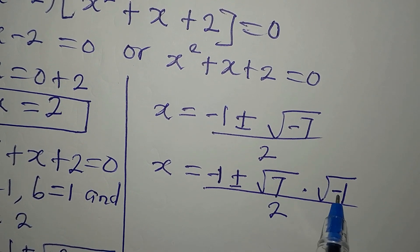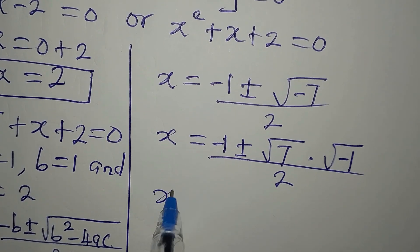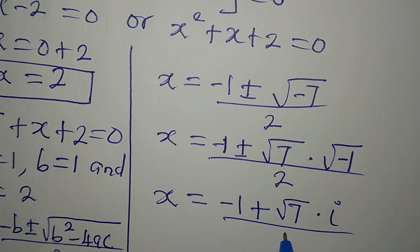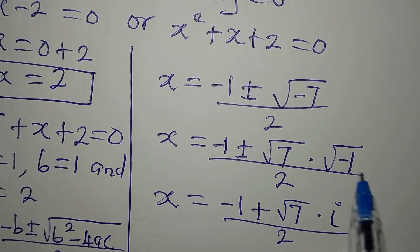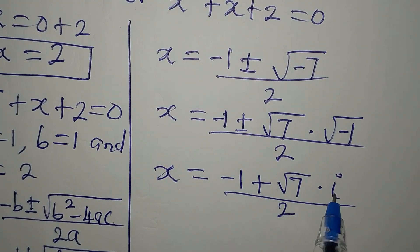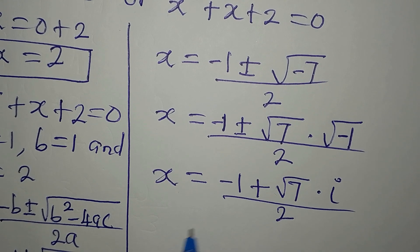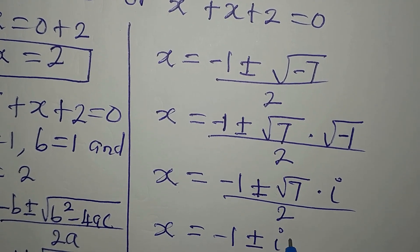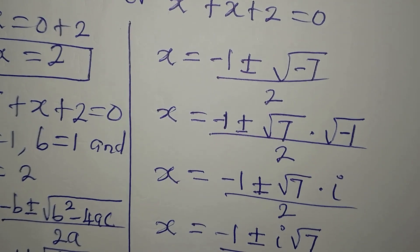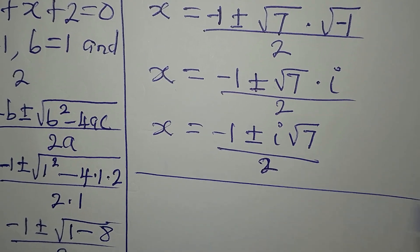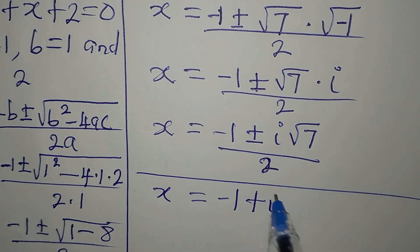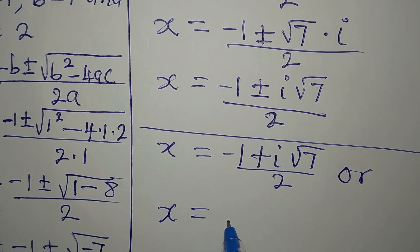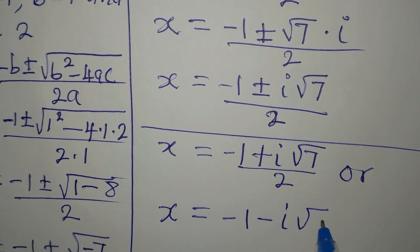We rewrite: x equals minus 1 plus or minus the square root of negative 1 times 7, divided by 2. The square root of negative 1 is imaginary, so we write i for that, giving x equals minus 1 plus or minus i root 7, all divided by 2. This is a two-in-one solution: x equals (minus 1 plus i√7) over 2, or x equals (minus 1 minus i√7) over 2.